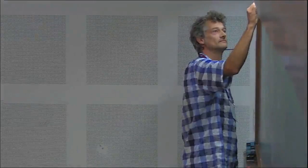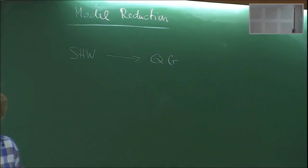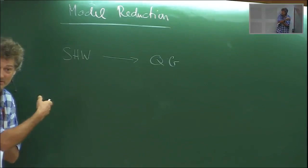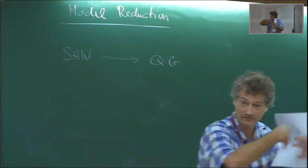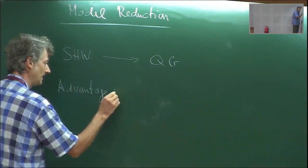What I would like to talk about is what I call model reduction. To make contact with what you've learned so far, you've already encountered model reduction. In Jay's lectures, you would have done a reduction where you went from the shallow water equations and derived the quasi-geostrophic equations. This is a model reduction in a sense where the velocity field had divergence components that were not divergence-free, whereas here the velocity field was divergence-free.